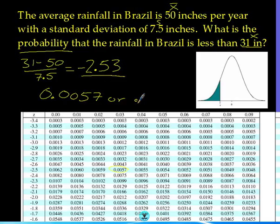Or if you're a percent person, that ends up being 0.57%. So there's a 0.57% chance that there will be less than 31 inches of rain in Brazil in a given year, which is a really small number. So that's how you use the z-score table to do a problem working from the outside in to find a probability.